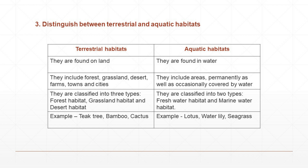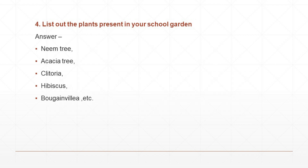Fourth question: List out the plants present in your school garden. Answer: neem tree, acacia tree, clitoria, hibiscus, bauhinia, etc.